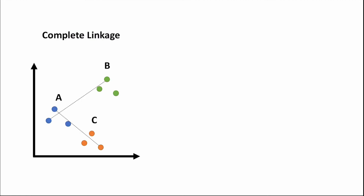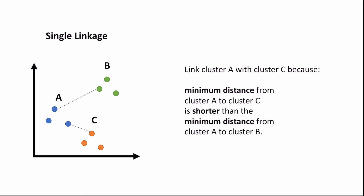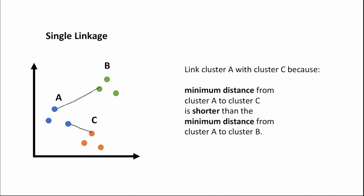There is also complete linkage, where we link cluster A with cluster C because the maximum distance from cluster A to cluster C is shorter than the maximum distance from cluster A to cluster B. There is also single linkage, where we link cluster A with cluster C because the minimum distance from A to C is shorter than the minimum distance from A to B.